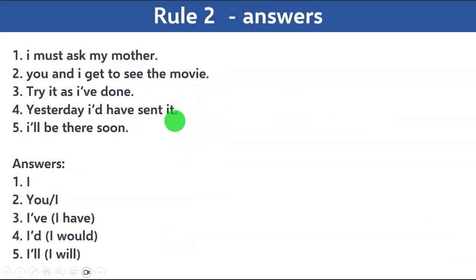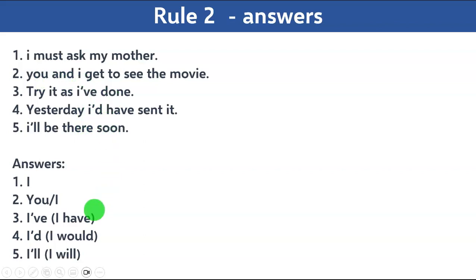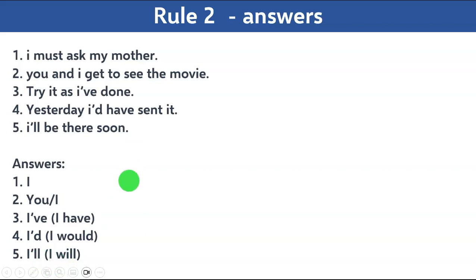Alright, let's look at the answers. 'I must ask my mother' — 'I' will be capitalized. 'You and I get to see the movie' — 'You' and 'I' will be capitalized; 'You' is the first word per rule one. 'Try it as I've done' — 'I've' is short for 'I have,' so 'I' is capitalized. 'Yesterday I'd have sent it' — 'I'd' is short for 'I would,' so 'I' is capitalized. 'I'll be there soon' — 'I'll' is short for 'I will,' so 'I' is capitalized.